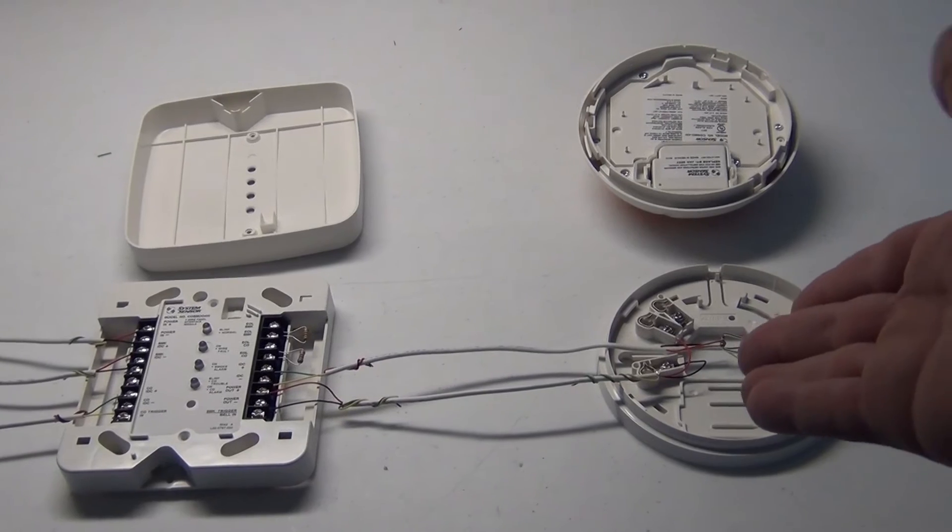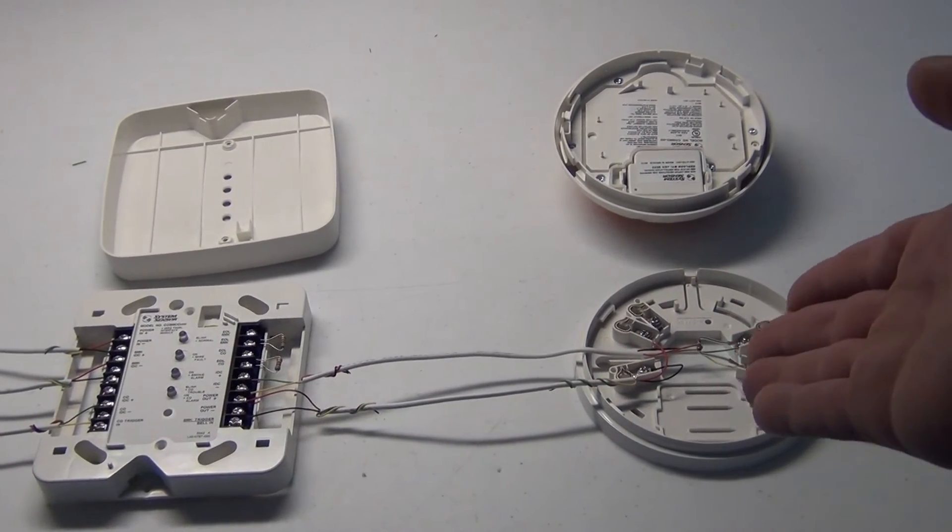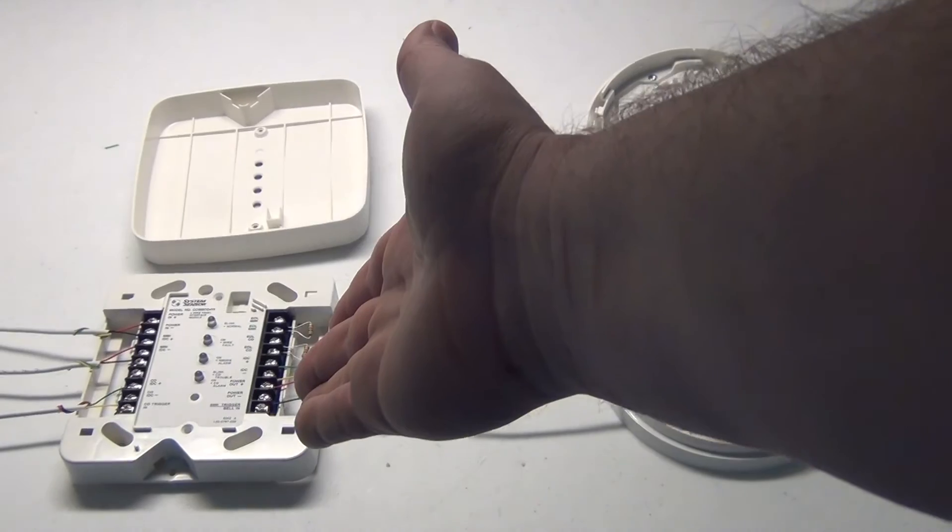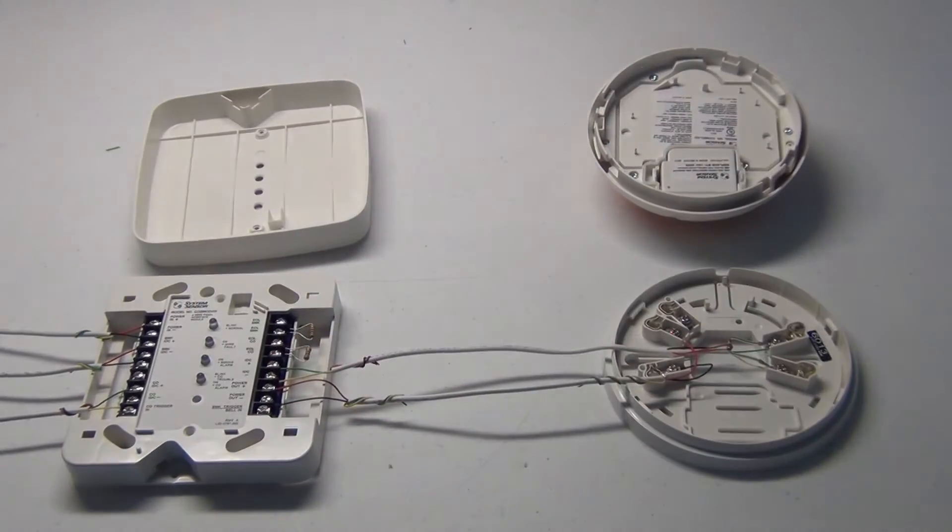All right folks over here on the right we have the smoke CO combo unit and to the left here we have the interface module. I'm going to take you over the wiring of these.